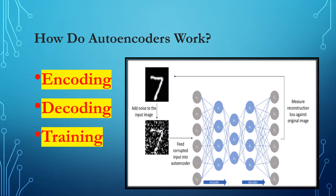Imagine the autoencoder as a comprehension machine for data. It works by first compressing the data, like compressing a book into a concise summary of its main points, then reconstructing the original book from that summary. By doing this, the encoder learns to extract the most important information from data and discard the less important details.